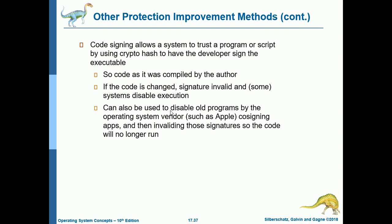Code signing allows a system to trust a program or script by using a cryptographic hash — the developer signs the executable. If the code is changed, the signature will be invalid and some systems will disable execution. Code signing can also be used to disable old programs — operating system vendors such as Apple can co-sign apps and then invalidate those signatures so the code will no longer run.